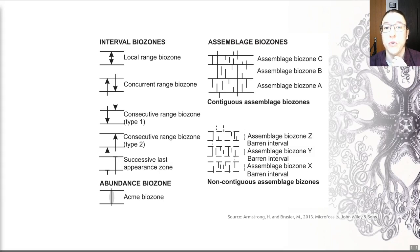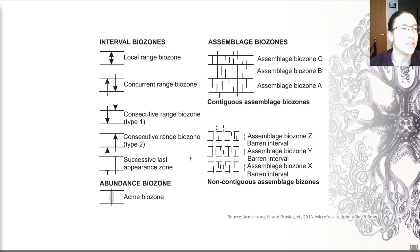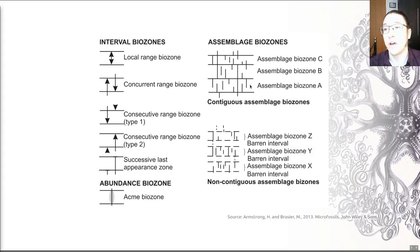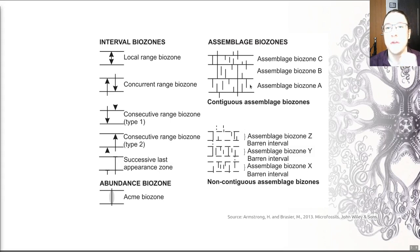The assemblage biozone is often used when you have an association of three or more species. You can see examples on the right hand side here — each one of these lines represents the existence of one species, and these different biozones are defined by different collections of those particular species. Species associations are strongly dependent upon local ecology, so these biozones are typically only suitable for local or within-basin applications. But when it comes to our echinoids, they're pretty useful.